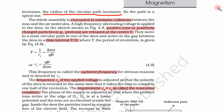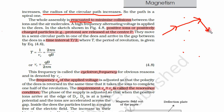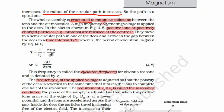The whole assembly is evacuated — all the particles move in vacuum. Otherwise, there would be too many air molecules, and the particles would collide with them, losing their velocity and energy, making it very difficult to move in a circular path. The machine is in vacuum to minimize collisions between the ions and air molecules.